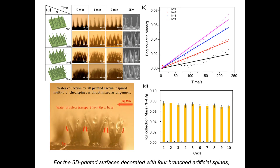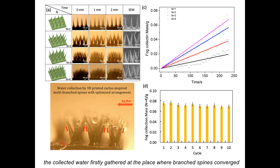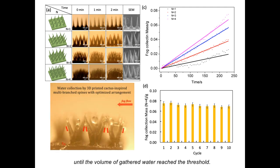For the 3D-printed surfaces decorated with four branched artificial spines, the collected water firstly gathered at the place where branched spines converged. The gathered water then flowed out and fed into the adjacent area between the clusters until the volume of the gathered water reached the threshold.